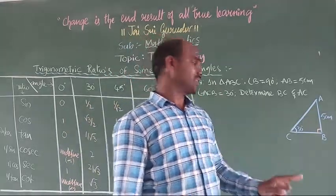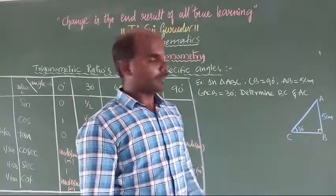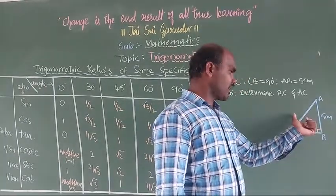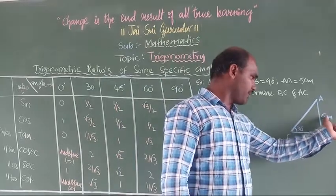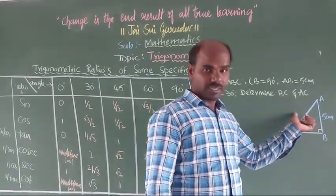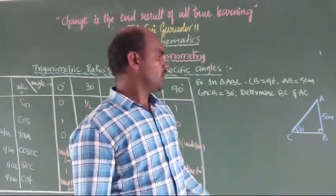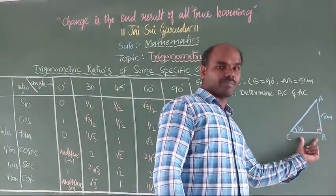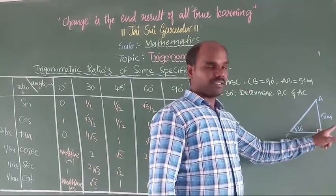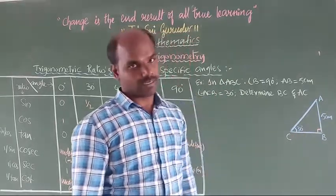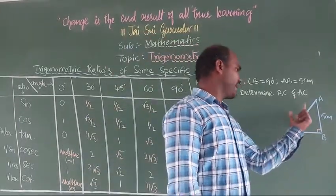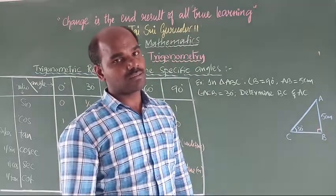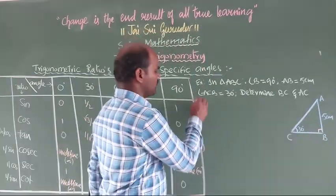Only two measurements are given: one is an angle and one is a side. For this angle C, this is the opposite side. So this is adjacent and this is opposite, and this is the hypotenuse. To find BC, we use this side and this angle. Since it is opposite by adjacent, tan will be applied. And for AC, since it is opposite by hypotenuse, sine will be applied.